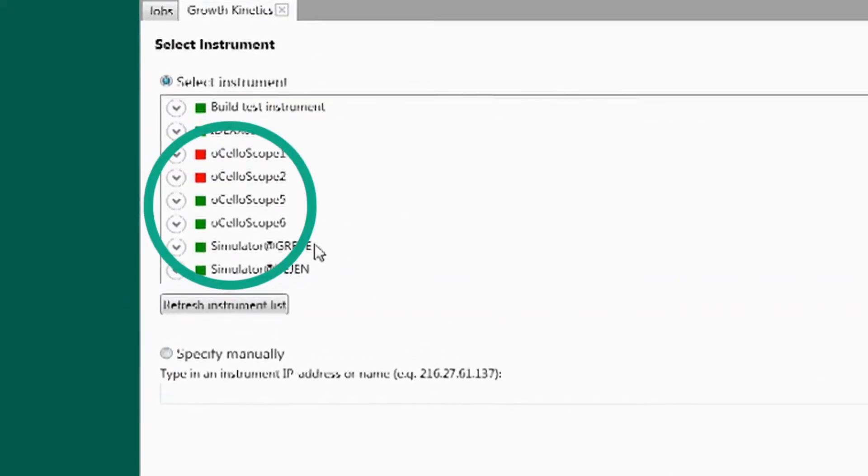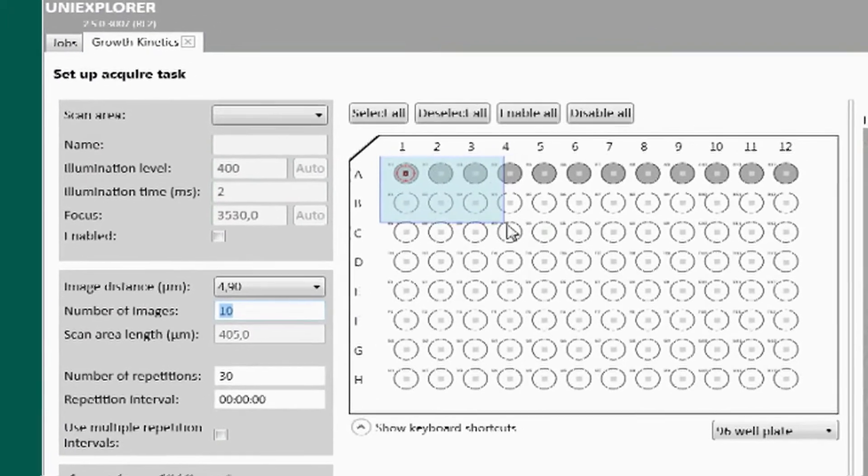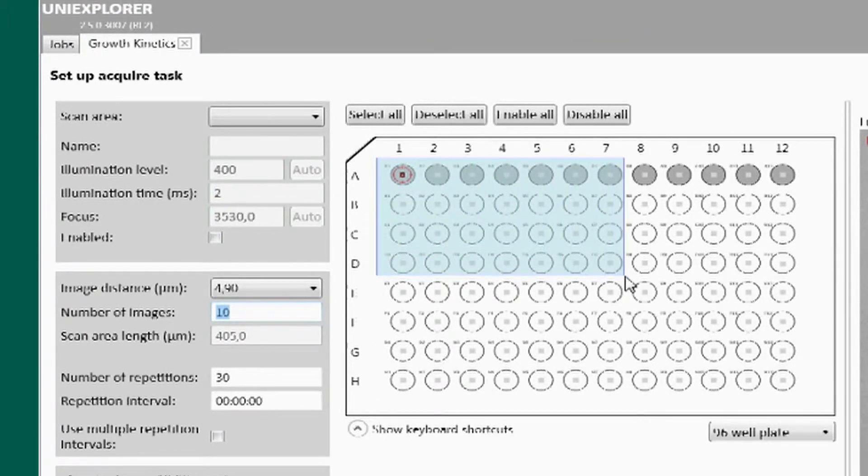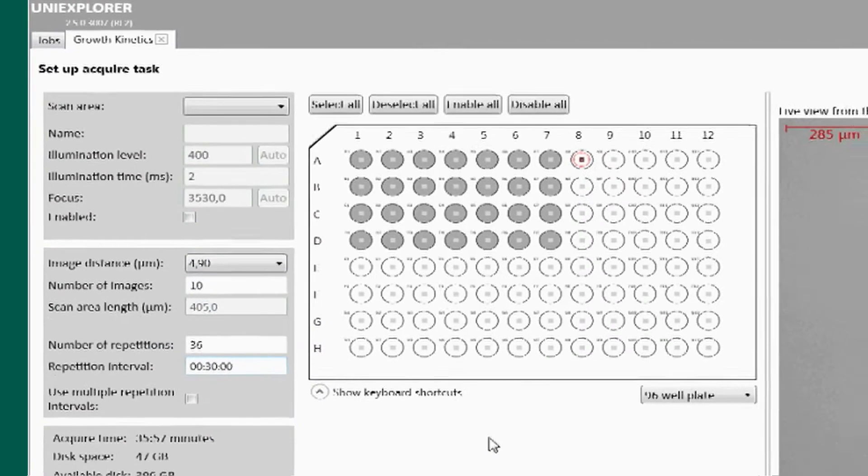If more than one Ocelloscope is present on the network, the relevant instrument is chosen from the list. Finally, the individual wells that are to be analyzed are chosen, as well as how long the measurement should last and how often the sample should be scanned.